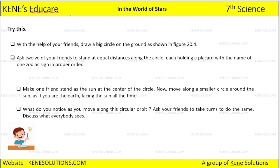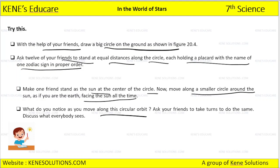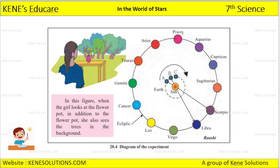Try this activity: with the help of your friends, draw a big circle on the ground. Ask 12 of your friends to stand at equal distances along the circle, each holding a placard with the name of a zodiac sign in proper order. Make one friend stand as the sun at the center of the circle, and move along a smaller circle around the sun as if you are on earth, facing the sun all the time.